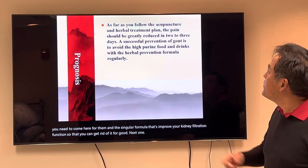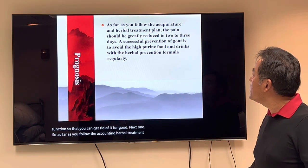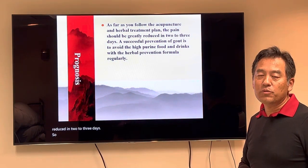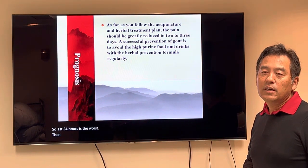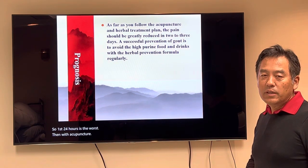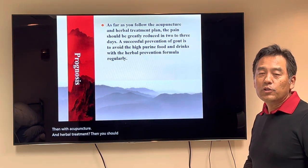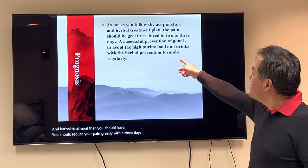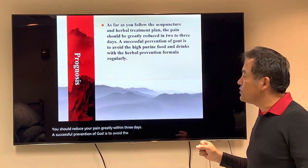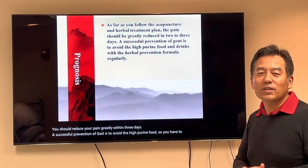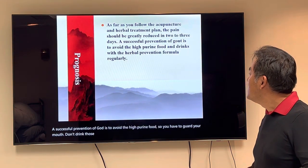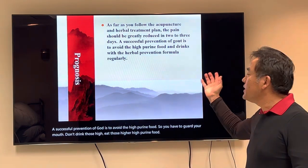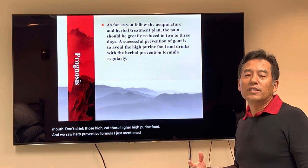As long as you follow the acupuncture and herbal treatment plan, the pain should be greatly reduced in two to three days. The first 24 hours is the worst. Then with acupuncture and herbal treatment, you should reduce your pain greatly within three days. A successful prevention of gout is to avoid high-purine foods — you have to guard your mouth and not eat those high-purine foods. And with the herbal prevention formula I just mentioned — Cang Zhu, Huang Bai, Gui Zhi — you can prevent recurrence.